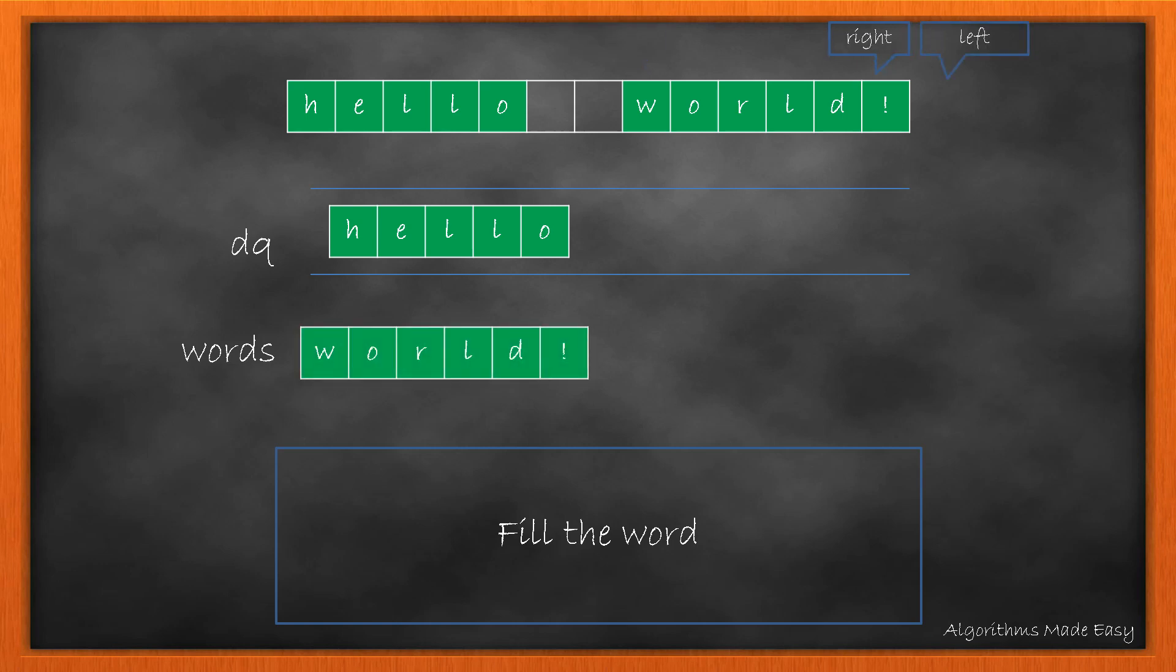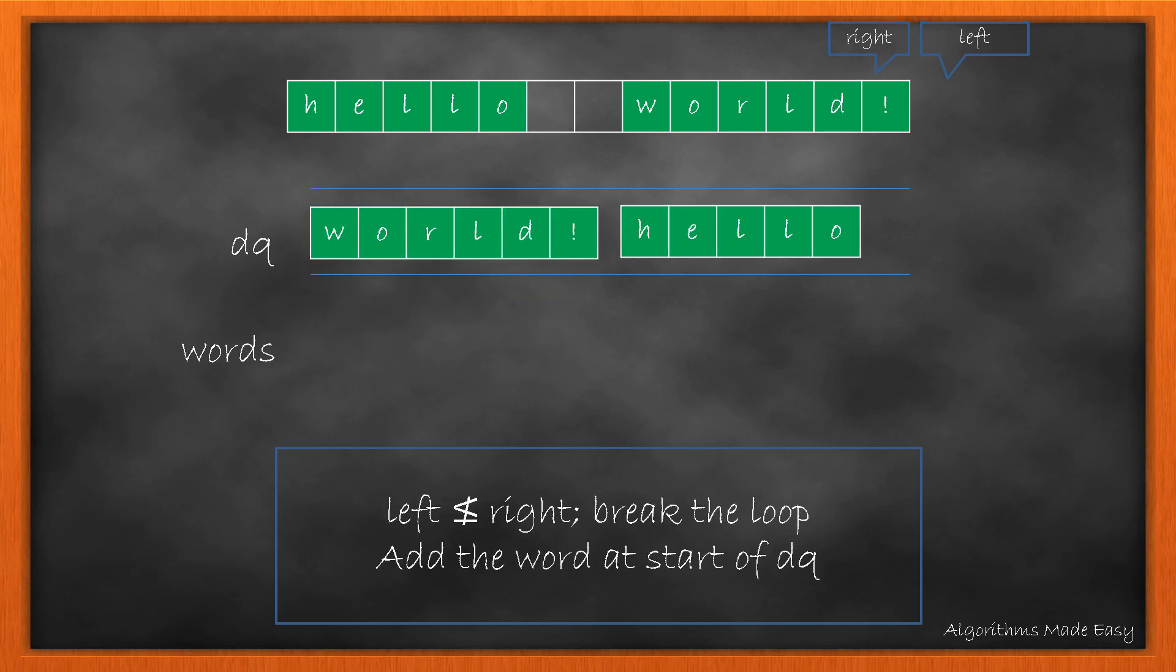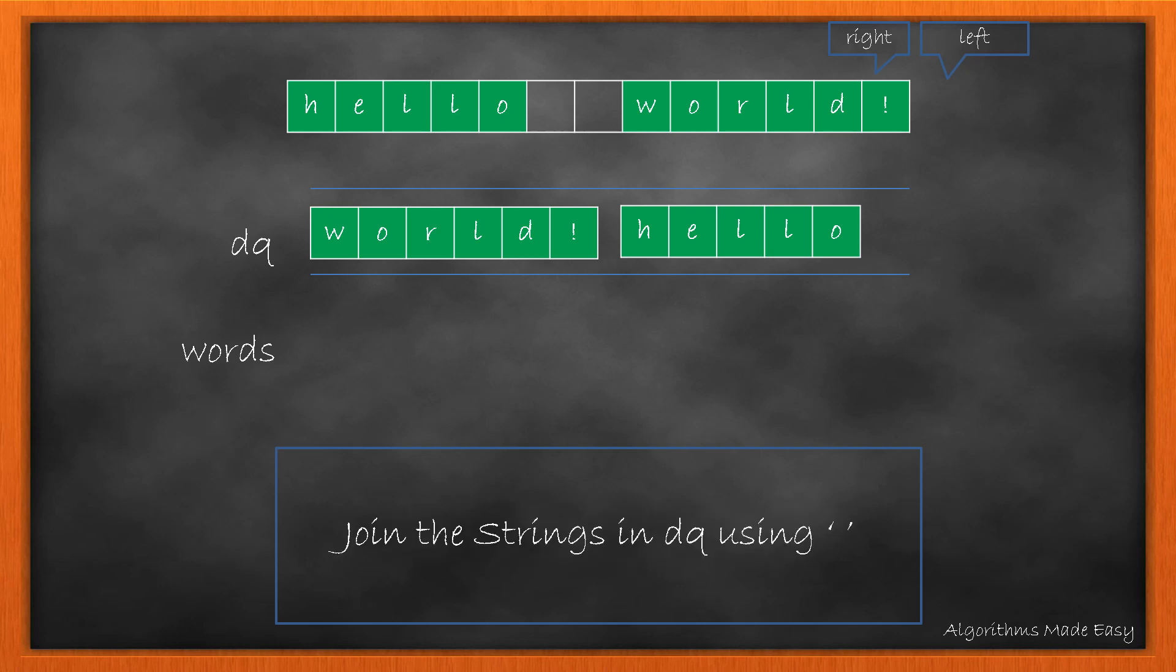This time we get the next word while the left pointer reaches beyond the end. Now as we have reached the end of string and left pointer is no longer less than the right, the loop breaks. So we come out of the loop and add this last word in front of the DQ. We then join the strings in DQ with a space as a separator. This gives us the desired result string, so we return it.